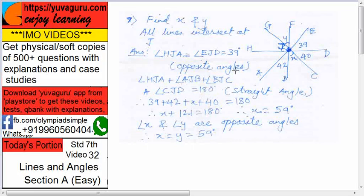Now you know three of them, write each one, 39, 42, X and 40. The total is 180. So add them 121, X plus 121 equals to 180. So X equals to what? Take 121 on this side, it becomes 59.